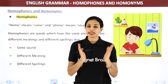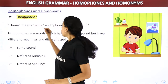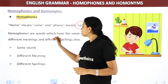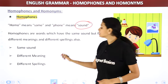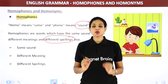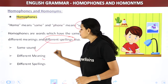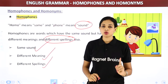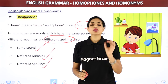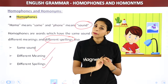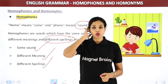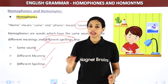Homophones — as I mentioned, 'homo' means same and 'phone' means sound. Homophones are words which have the same sounds but different meanings and different spellings. Their spelling is different. So: same sound, different meanings, and different spellings. In homographs: same spelling, same or different pronunciation, different meaning. In homophones: only the sound is the same; everything else is different.